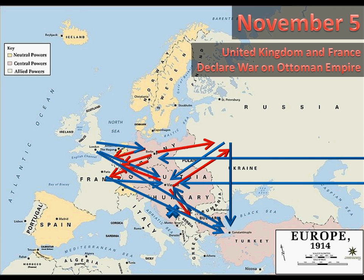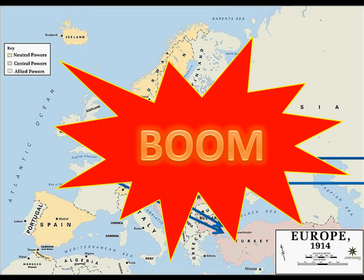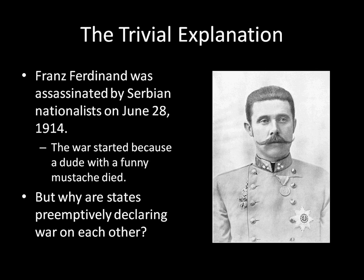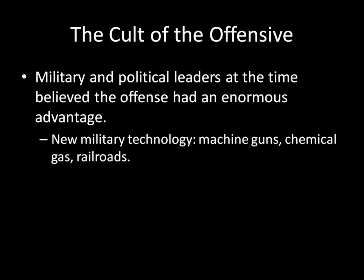So basically, to summarize: one person got assassinated and suddenly a big world war started within Europe, all because of this one guy getting assassinated in Sarajevo by some Serbian nationalists. The trivial explanation is that the war started because a dude with a funny mustache died. But there are a lot of curious things going on here besides the assassination. Why are these states preemptively declaring war on one another? If we're going to actually understand why this war happened the way it did, we need to answer that question. The most popular explanation is the Cult of the Offensive.